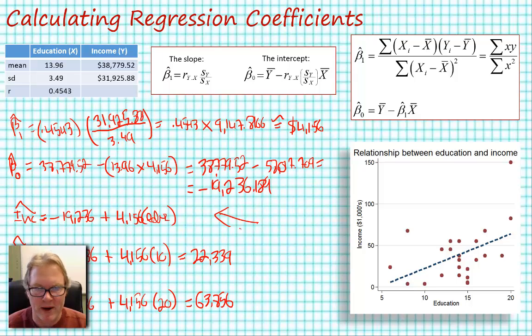I am however interested in the slope coefficient, which we've already described. For a one unit increase in education, we see an average increase in income of slightly over $4,000, to be a little more precise about this.